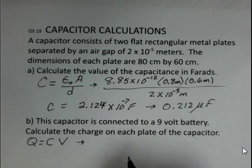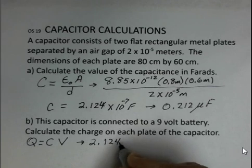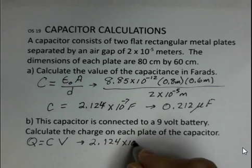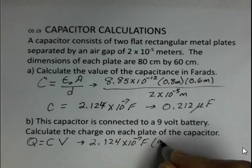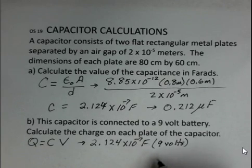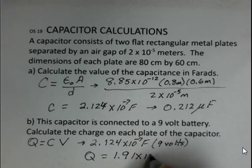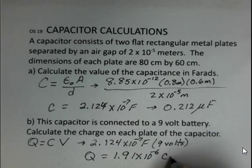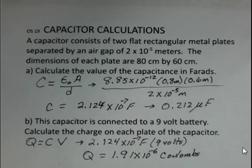We know the value of the capacitance, so we can go ahead and put that in. I'm going to go back to the powers of 10: 2.124 times 10 to the minus 7 farads. And we have a 9-volt battery. So this is standard metric units. Multiply those two together, and we've got 1.91 times 10 to the minus 6 coulombs. One plate's carrying this as a positive charge, the other plate carrying this as a negative charge.